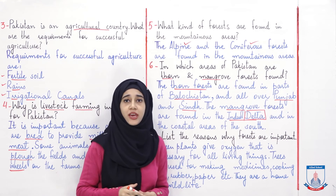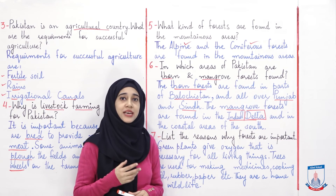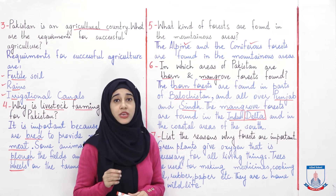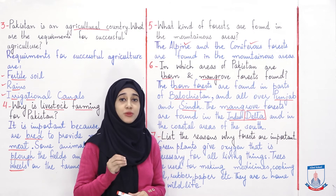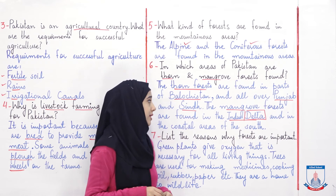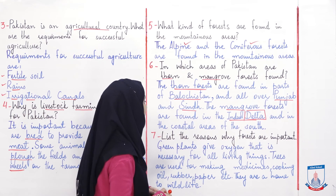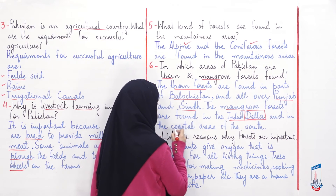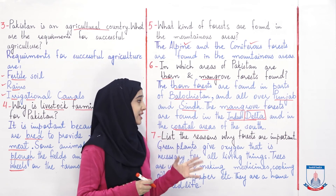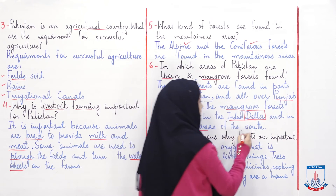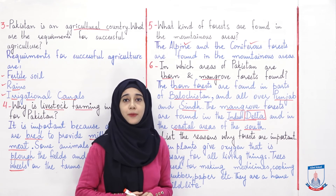Indus Delta کے area میں — اور delta کے بارے میں ہم نے بات کی تھی — یہ وہ area جہاں سے کوئی دریا گزر جاتا ہے اور جا کر گرتا ہے کسی اور دریا میں یا سمندر میں۔ Delta کیا کہلاتا ہے — it is the wet land۔ یہاں چیزیں اگانا اس لیے مشکل ہوتا ہے کیونکہ یہاں کی مٹی میں بہت زیادہ salts ہوتے ہیں۔ So the mangrove forests are found in the Indus Delta and in the coastal areas of the south — coastal areas یعنی دریا یا سمندر کی side کا area — کیونکہ پاکستان کے south میں Arabian Sea ہے۔